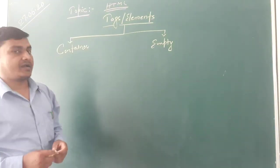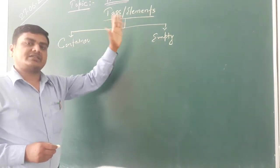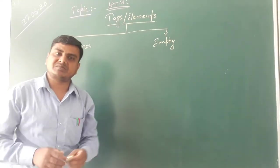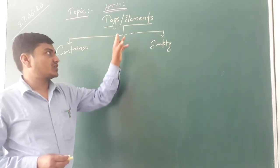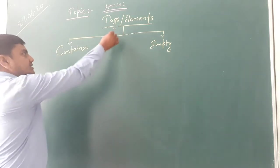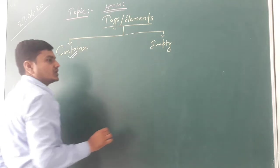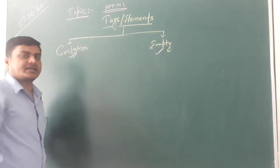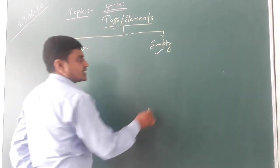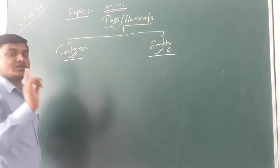Today in this video I am going to discuss the further topic in HTML. In the previous video we discussed something about tags or elements. Tags or elements are special type of words which are enclosed into left angle and right angle brackets. All tags or elements are divided into two categories: one is known as container and another one is known as empty. Container tags have two positions — opening and closing — and empty tags have only one position, that is only opening.